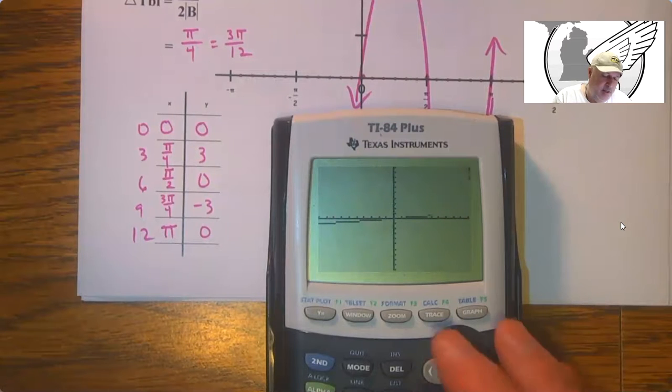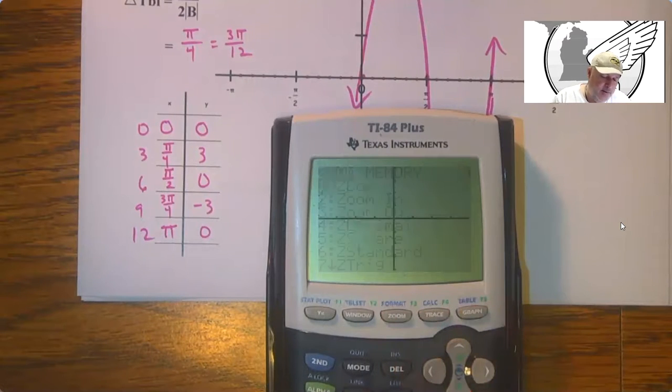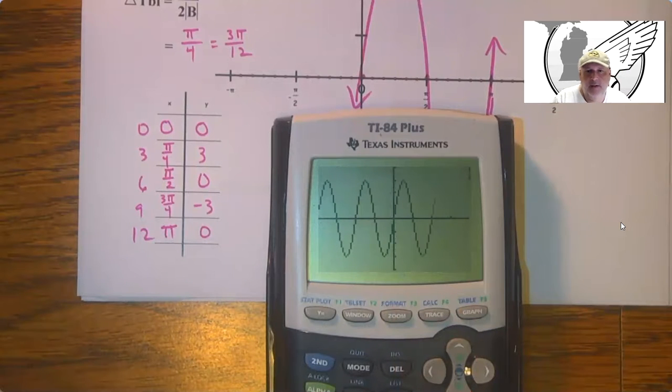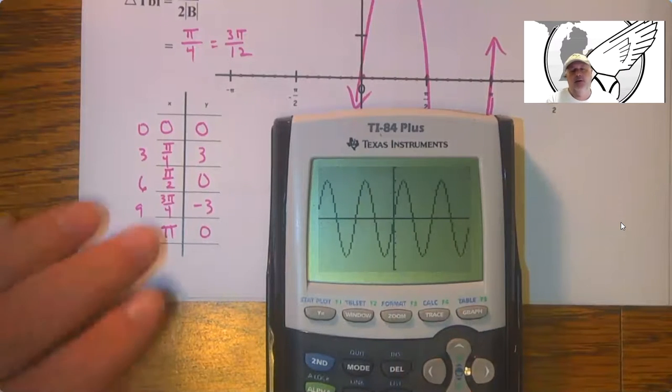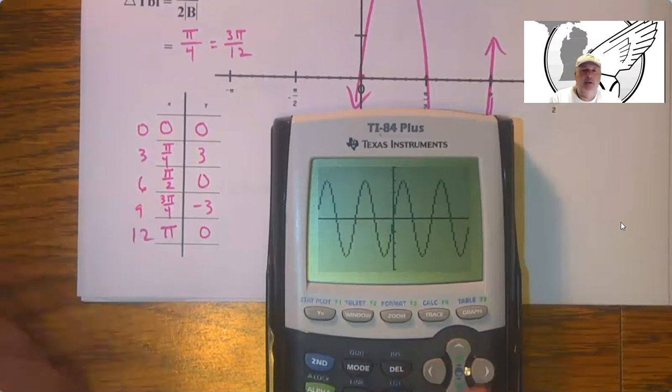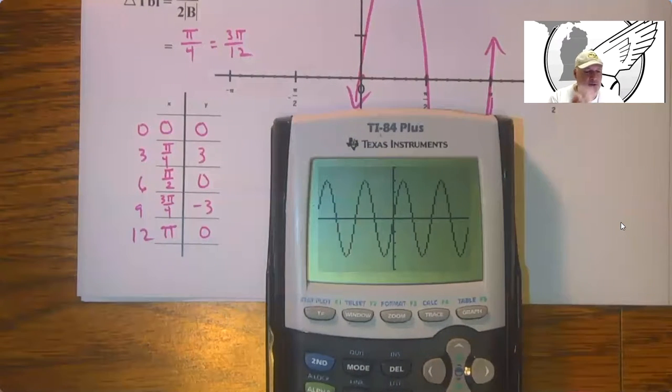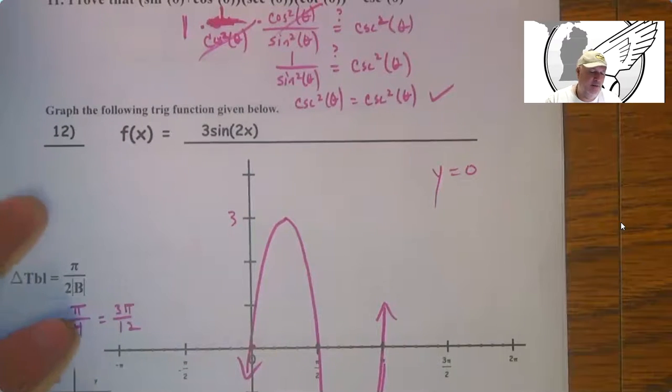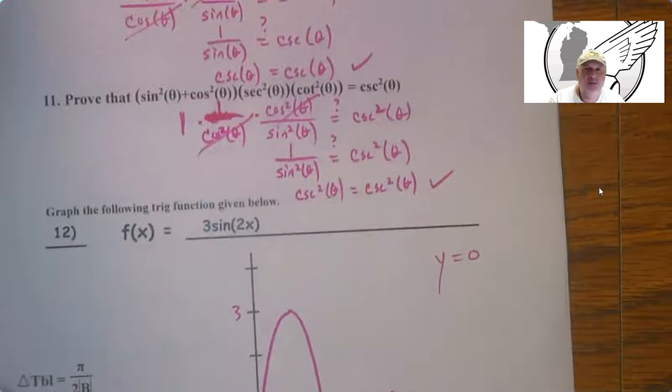You can also take a look. You got to do zoom trig. That's a goofy little thing that you got to do to get the axes to work out right. Anyway, so that's practice quiz 3 for quiz 6 in the third trimester of Algebra 2.